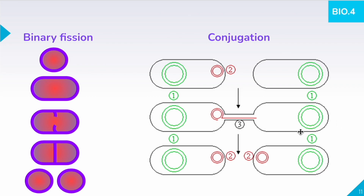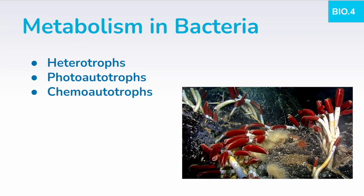Bacteria can get their food or energy in a variety of ways. Some are heterotrophic, meaning they get their food by consuming others. Some are photoautotrophs, meaning they get their food by absorbing sunlight energy and converting that into organic molecules. Some are chemoautotrophs, where they don't have access to sunlight and get their energy from a variety of chemicals. These deep sea worms often feed off of chemoautotrophic bacteria, which can provide the foundation for a deep aquatic food web.